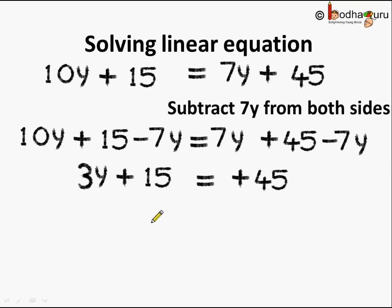Next what do we do? We subtract 15 from both sides. Why? This way on the LHS only the variable is left. Hence we subtract 15 from both sides.